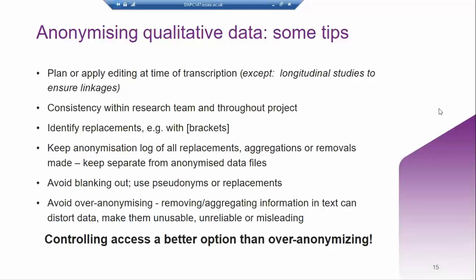Qualitative data can be particularly tricky to anonymize. The very nature of it means it's full of indirect identifiers, particularly when you have rich biographical data. You should anonymize at the time of transcription, unless you need to link your data or have explicit permission from your participants to use unanonymized data. Aim for consistency across your dataset — consider writing up an anonymization plan, which I'll show you a little bit later.